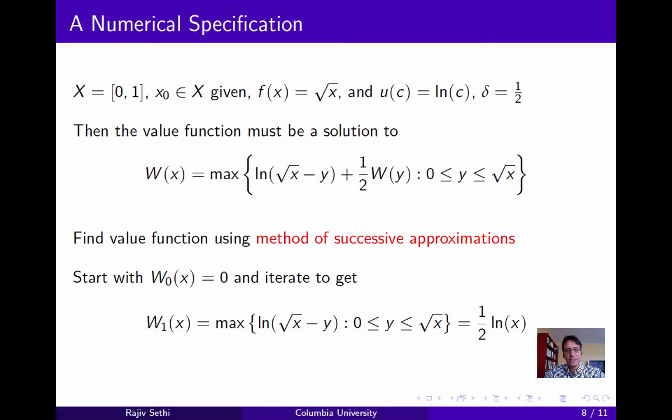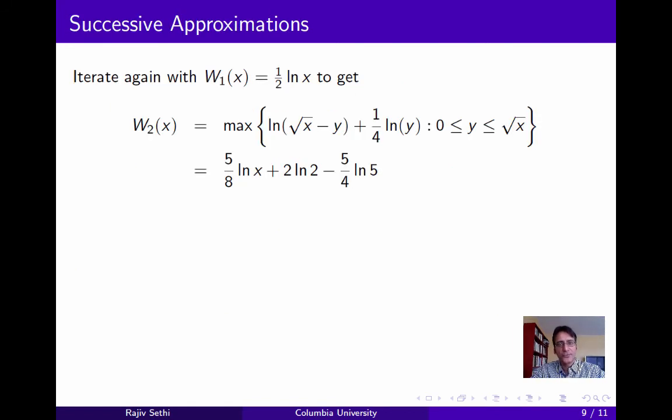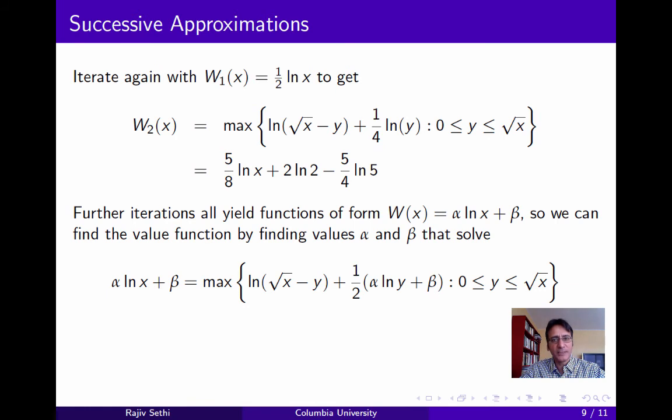Now of course this is not the value function because this is not a solution to the functional equation. But we can take w1 of x as our next starting point and apply the same reasoning to find w2 of x. Now if you do that, you can verify that w2 of x will be given by the expression on the slide. And if you iterate further, you'll see that all the value functions you're obtaining have the form alpha log x plus beta, where alpha and beta are parameters. Now this suggests that the limit of this sequence of approximations will also have this form. And if we use this conjecture, we just need to find two parameters, alpha and beta, that allow us to solve the functional equation. And if you do that, you indeed find a function that is a fixed point of the functional equation, and that corresponds to the value function we were looking for by the principle of optimality.